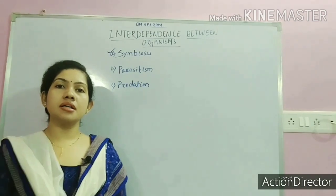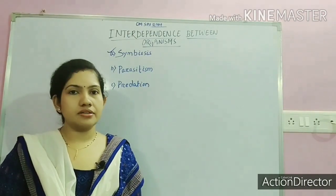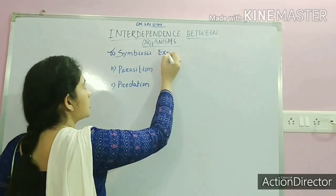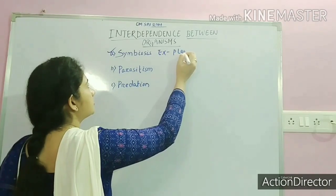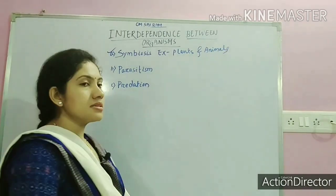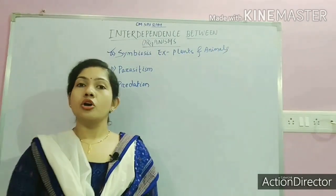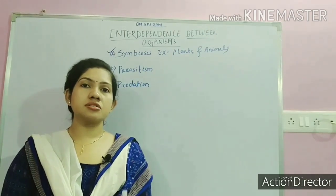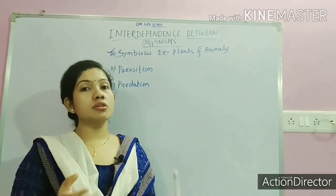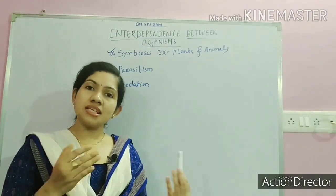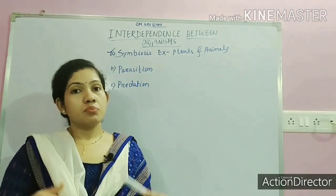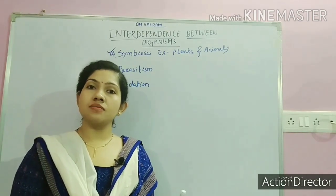A very simple example we can take is animals and plants. Both plants and animals are interdependent on each other. We animals are heterotrophs and we have to depend on producers to get our food. At the same time, plants also depend on animals for pollination — like bees, which help in pollination.